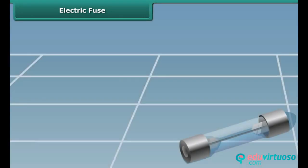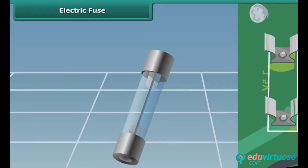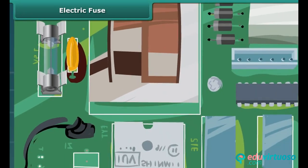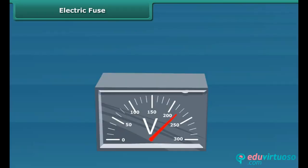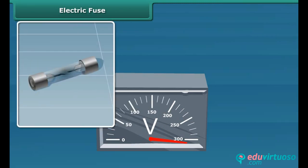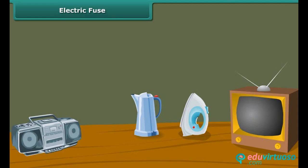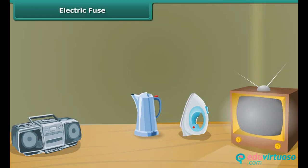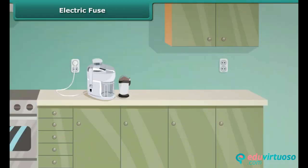A safety fuse is a device that protects an electric circuit. The heating effect of electricity is used in this case. When the current drawn is beyond a certain value, the fuse wire gets overheated, melts, and breaks the circuit. This prevents fire and damage to various electrical appliances. Fuses of different kinds are used for different purposes.